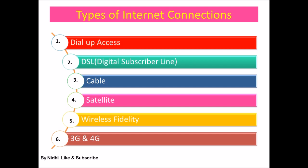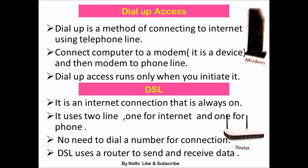Third is cable, fourth is satellite, fifth is wireless fidelity, and sixth is third generation and fourth generation — that is 3G and 4G. Now we are going to look at all of these one by one.